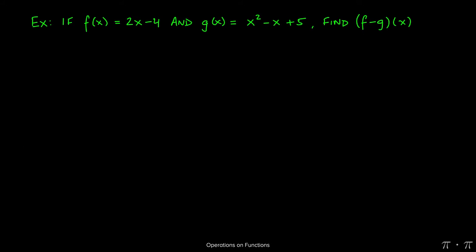Let's say we're given two functions: f of x equals 2x minus 4 and g of x equals x squared minus x plus 5. For this problem we're asked to find f minus g of x.